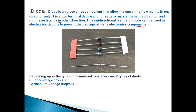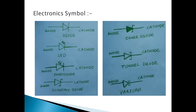Depending upon the type of material, there are two types of diode: one is silicon and the second one is germanium. When we apply voltage across the diode, there is always some voltage drop across it. If the diode is made of silicon material, then the voltage drop is 0.7V. If it is germanium material, then the voltage drop across the diode is 0.3V.